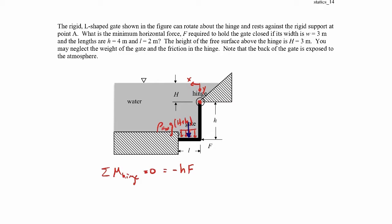That pressure force on the horizontal gate section creates a moment in the positive Z direction because it acts to rotate the gate counterclockwise about the hinge. The moment arm is one-half L, which is the distance from the center of pressure to the hinge. So the moment is one-half L times rho g (capital H plus little h) times L times W.